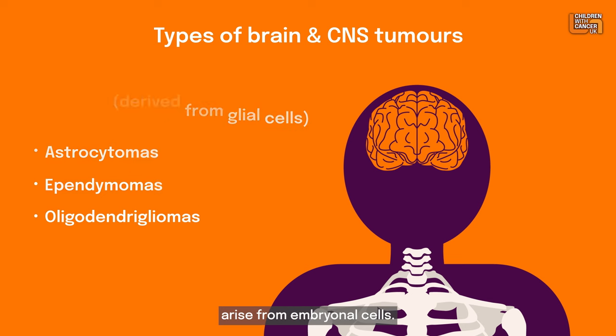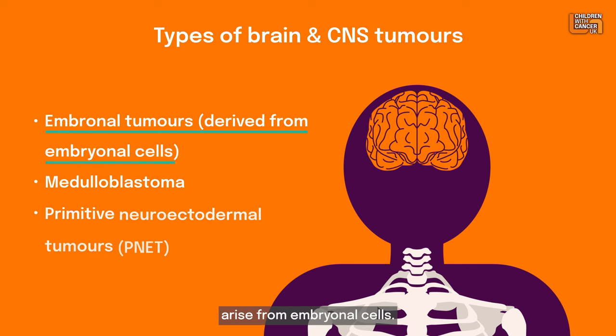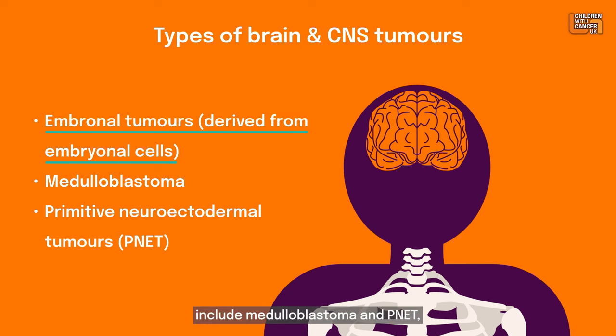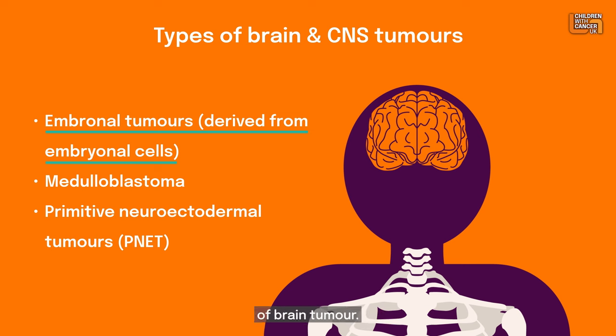Another group of tumours arise from embryonal cells. These tumours include medulloblastoma and PNET, that's short for primitive neuroectodermal tumour. Altogether, there are more than a hundred different types of brain tumour, most of which are very rare.